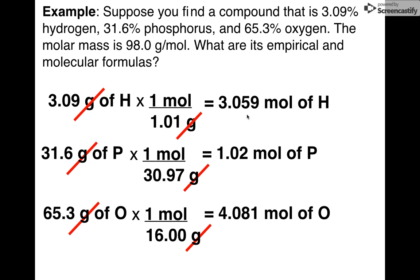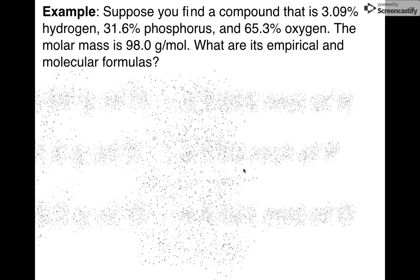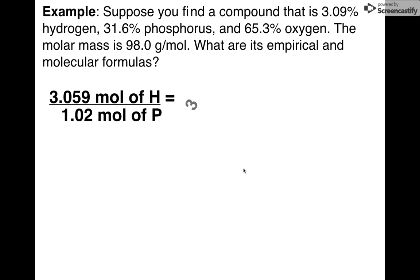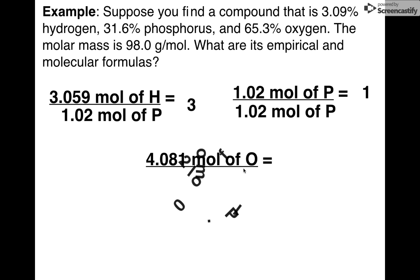Great. Now take a look at this. Which one of these is smallest? 1.02. All right. Let's divide each of those numbers by 1.02. Take that, divide by 1.02. I get 3. Take that, divide by 1.02. Obviously, I get 1. Take that, divide by 1.02. I get 4.